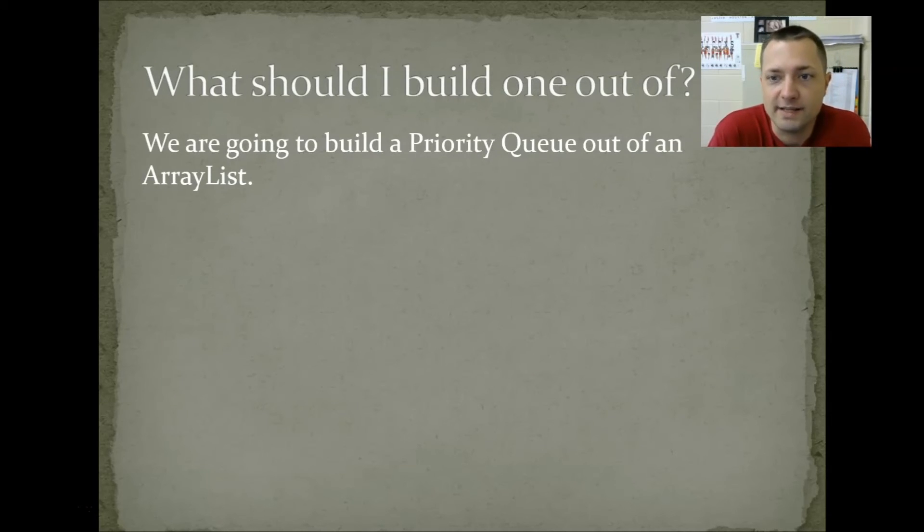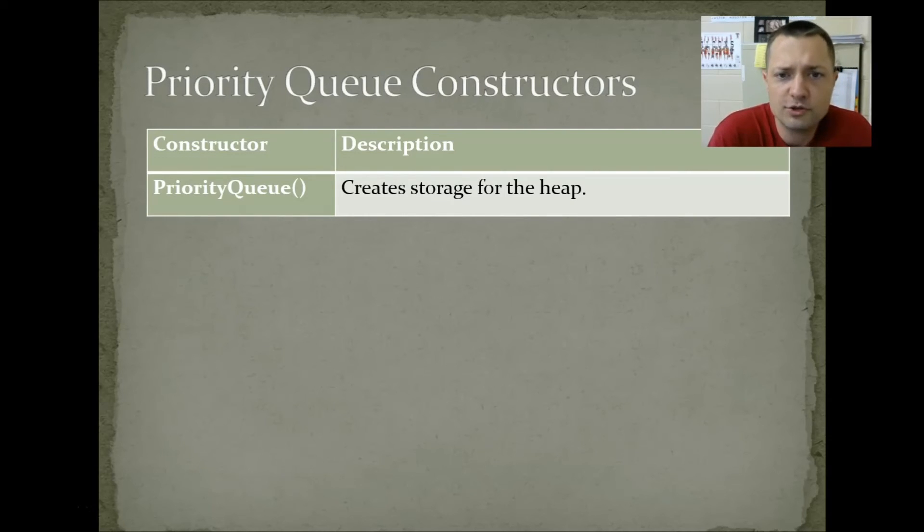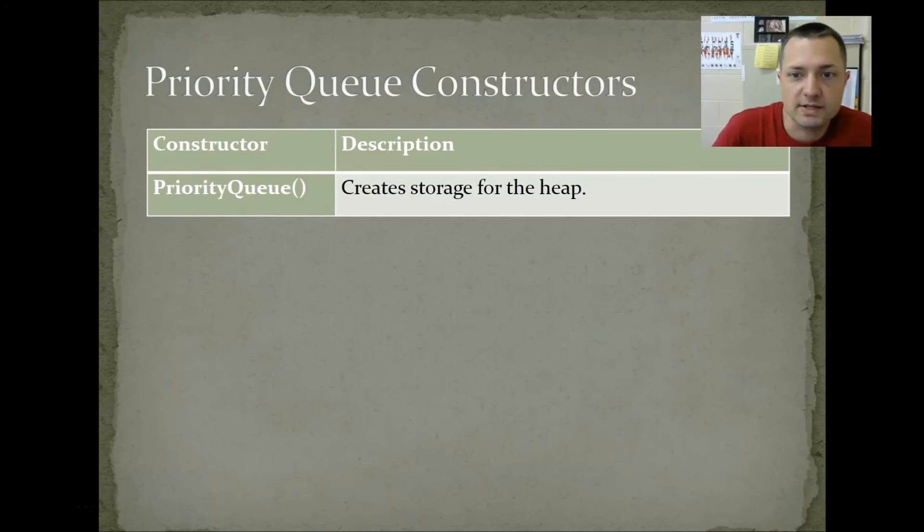What should I build one out of? We're going to build it out of an ArrayList. Priority queue constructors. Create storage for the priority queue, which for us is going to be an ArrayList. ToString returns a text version of the data in the priority queue. Peak returns the first item in the queue, null, if the priority queue is empty. Add adds an item to the priority queue. Offer also adds an item to the priority queue. Set at position x an item. Change the value at a given index to a different item. The old value is returned. We're probably not going to use that too much. Remove returns the item at the front of the queue, null if empty. Pull, the same thing as remove. Empty tells you if it's empty. Size tells you how many things are in it. Get x returns the item at position x, which we're probably not going to use. And clear.